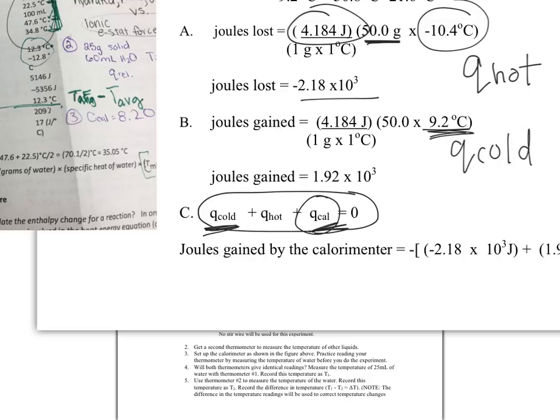So go ahead and take your Q hot and Q cold, add them together, and you're going to negate that value because we're swinging that Q cal over here to get a negative value. So you're going to have negative Q cold plus Q hot.